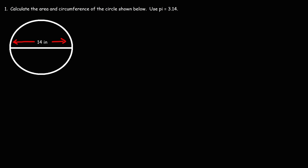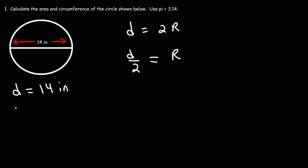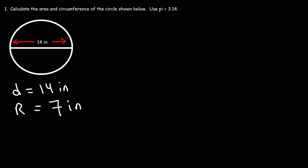Now let's work on a similar problem. This time we're given the diameter of the circle, which is 14 inches. To calculate the area and circumference, the first thing we need to do is find the radius. The diameter is twice the length of the radius, so the radius is half of the diameter. Half of 14 is 7, so the radius of this circle is 7 inches.